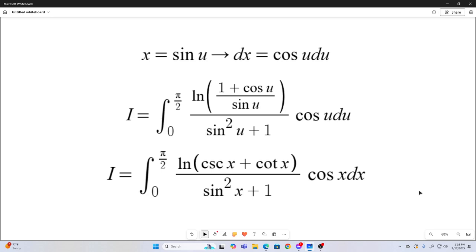So now it might be clear why I simplified it like that. I rewrote that natural log function like this, because the natural log of cosecant x plus cotangent x is the anti-derivative of negative cosecant x. So now we can use integration by parts.